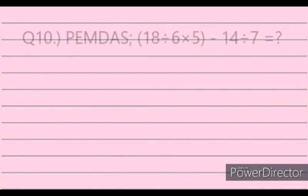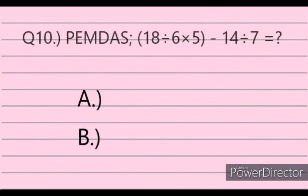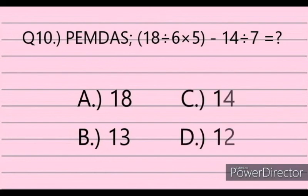Question 10. Use PEMDAS to evaluate: 18 divided by 6 times 5 minus 14 divided by 7. Answer choices: A. 18, B. 13, C. 14, D. 12.